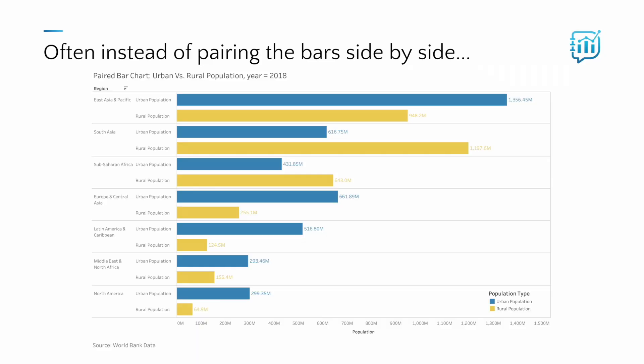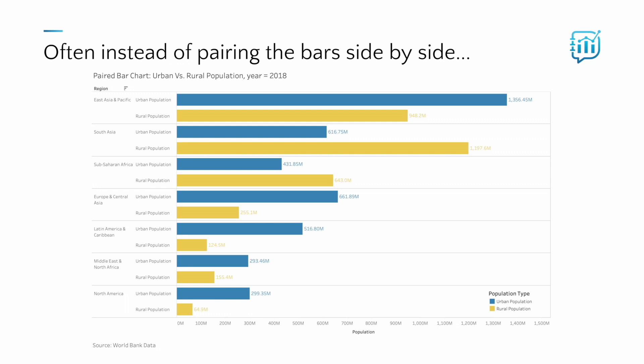We can consider one more alternative: instead of placing bars side by side — also called juxtaposing them — we can use superimposed marks on a dot plot like this. We still get to use position with a common baseline, and our eyes can more easily focus on one color or the other, with less ink getting in between the different marks we might want to compare.